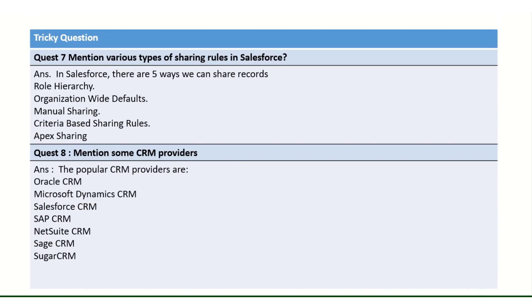Moving to the next question: what types of sharing rules do we have? We have OWD, role hierarchy, manual sharing, criteria-based sharing rules, and Apex sharing rules. This is a high-level overview — in my next scenario-based questions I will explain these in detail so you will come to understand all the options.